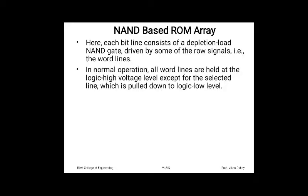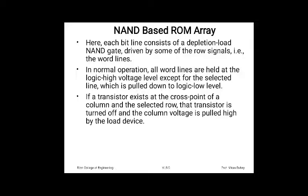In normal operation, all word lines are held at logic high voltage except for the selected line, which is pulled to logic 0. If a transistor exists at the cross point of a column and the selected row, that transistor is turned OFF when the row is driven low. The column voltage is then pulled high by the depletion load device.